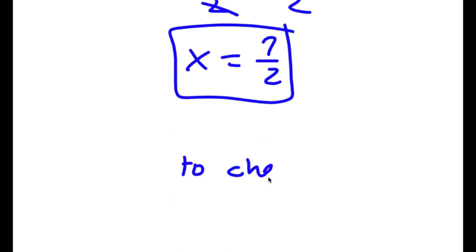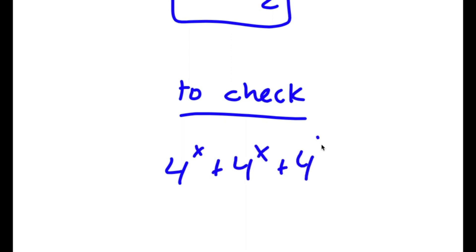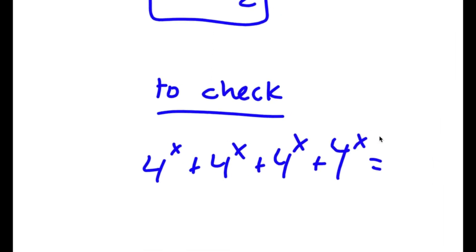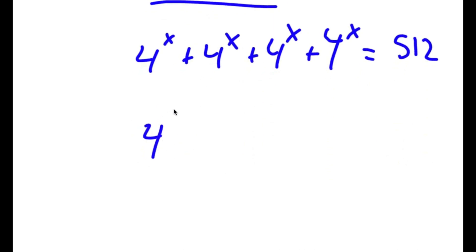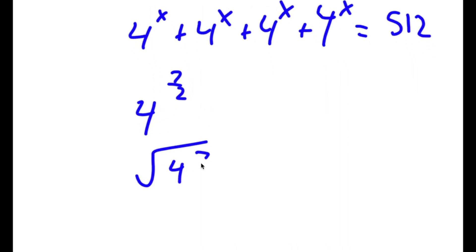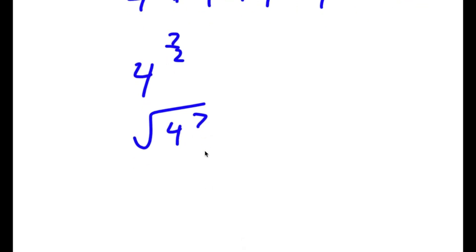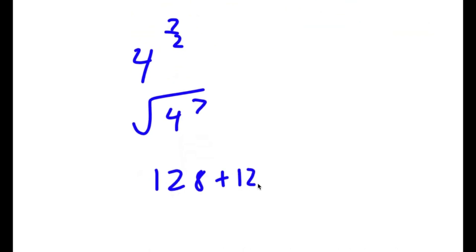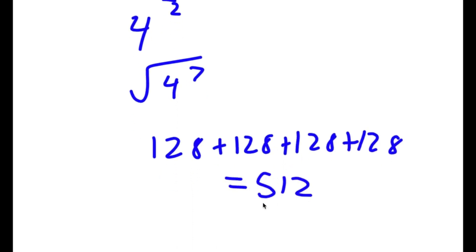To check: 4 to the power of x plus 4 to the power of x plus 4 to the power of x plus 4 to the power of x is equal to 512. So 4 to the power of 7 over 2 is the square root of 4 to the power of 7. Plugging into a calculator gives the square root of 4 to the power of 7 equals 128. So 128 plus 128 plus 128 plus 128 equals 512. So this is right.